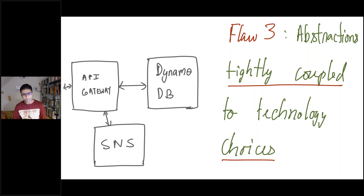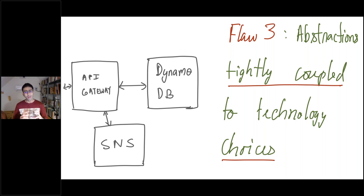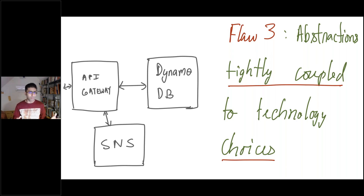The third flaw is that abstractions are tightly coupled to technology choices — in this case, naming specific technologies like API Gateway, DynamoDB, and SNS. While technology choices are important, you should defer technology solutions to as late as possible in the design cycle. When you have multiple technology choices, you're better off designing such that technology choices no longer matter. For example, instead of saying you want to use SNS, what's important is to say you need a distributed messaging solution. This makes your design independent of technology and simplifies decision making.